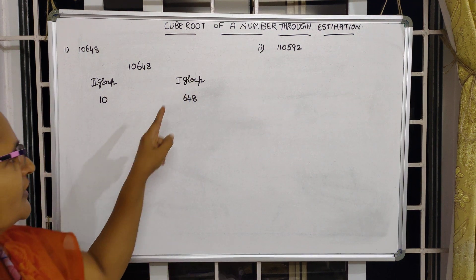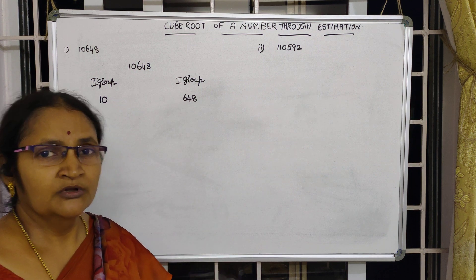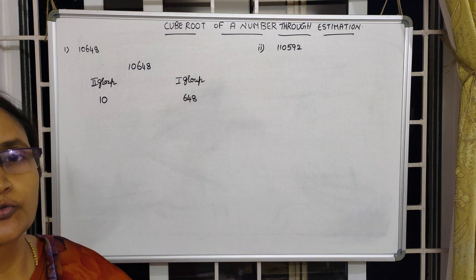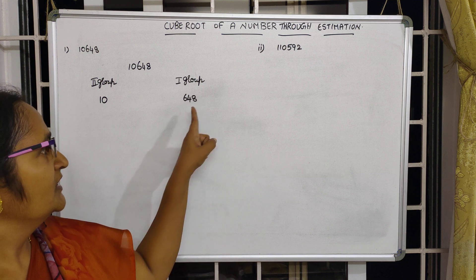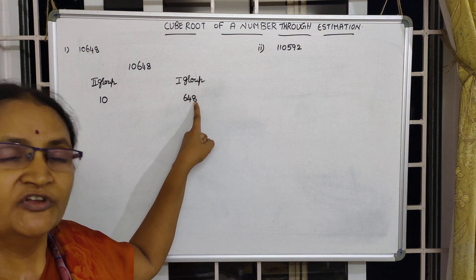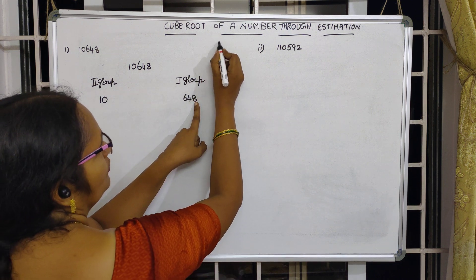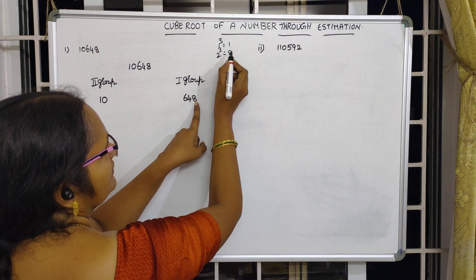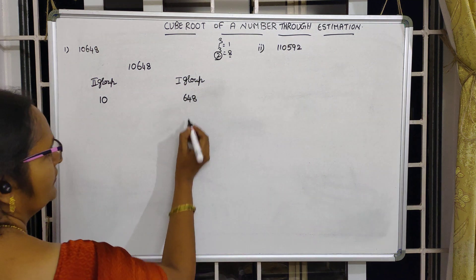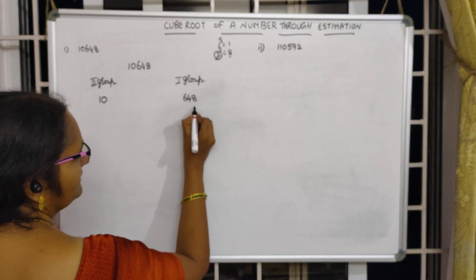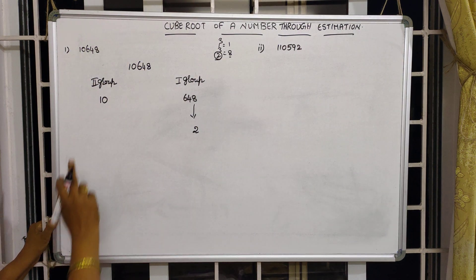Now, after dividing, we look into the first group. In the first group, the digit in the ones place is 8. We need to find in which number's cube we get 8 in the ones place. One cube is 1, two cube is 8. So in two cubed we get 8, therefore 2 will be taken as the ones place digit of our answer.